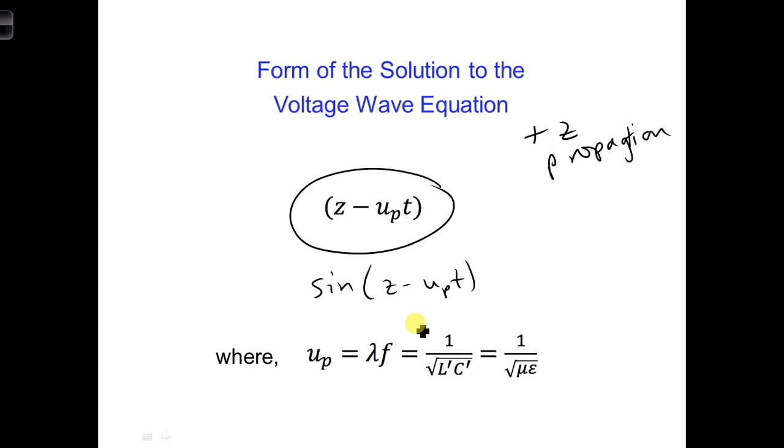Now consider a zero crossing in that sinusoid. So say right here, this point right there. There is a zero crossing when the argument is equal to zero. As time progresses, or as time increases,